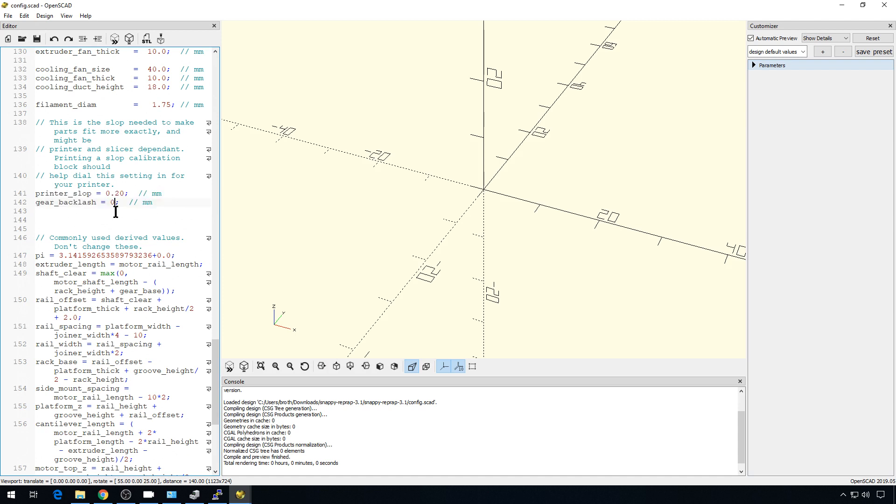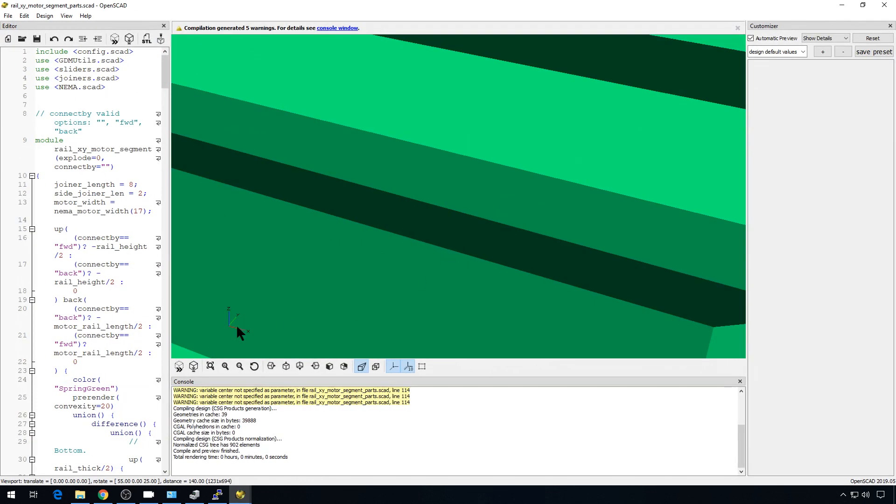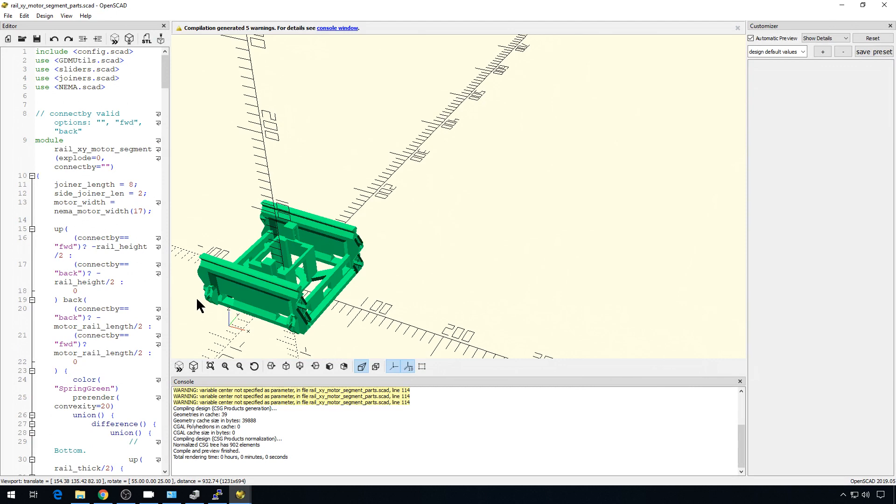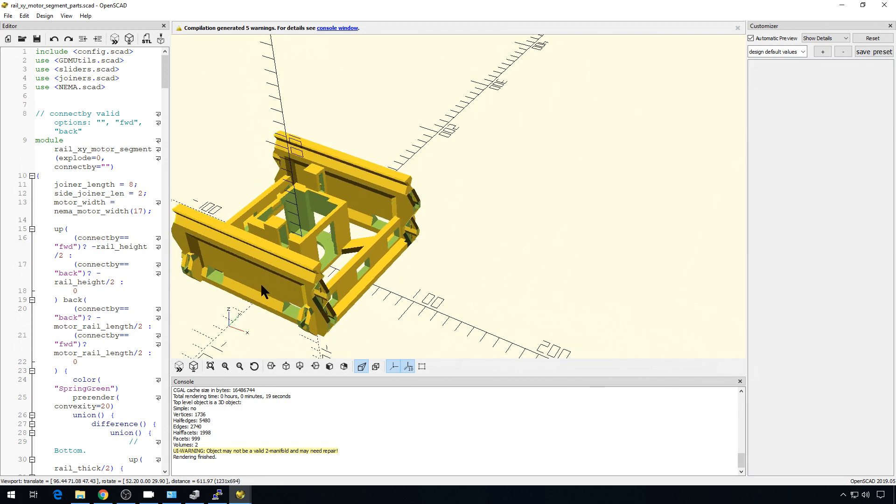You can also adjust gear backlash if you're having problems with that. I left mine zero, and everything seems to be working pretty well at the moment. Now on Linux or Mac, this would probably be a lot easier to adjust. But if you edit this config file, you need to save it, and you'll have to re-render your objects. So save your config file, go ahead and re-run these, and that will update your part with that new slop value.